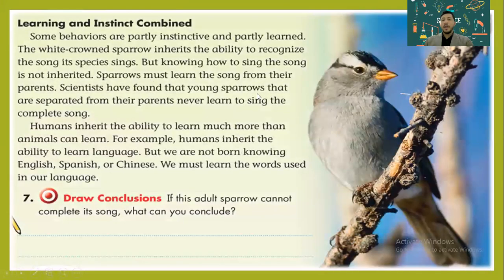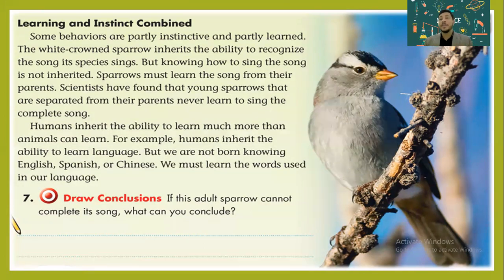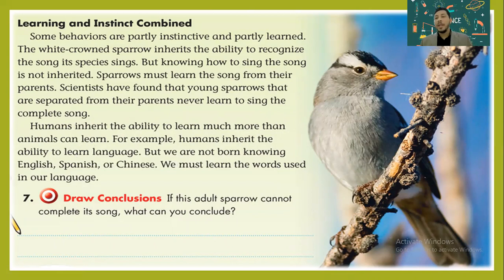Learned and instinct can be combined. That white-crowned sparrow inherits the ability to recognize its species' song. But if that young sparrow is separated from its parents when it's too young, it would never know how to sing that song. It can recognize the song its species sings, but if it didn't learn it from its parents, it can't sing it. Humans inherit the ability to learn much more than animals — for example, humans inherit the ability to learn language.